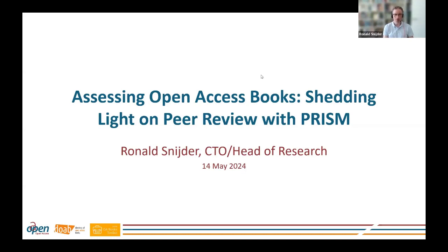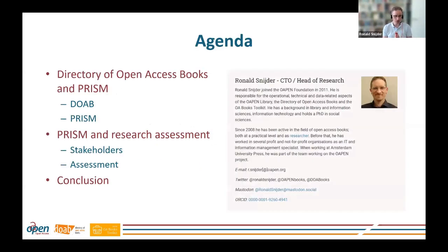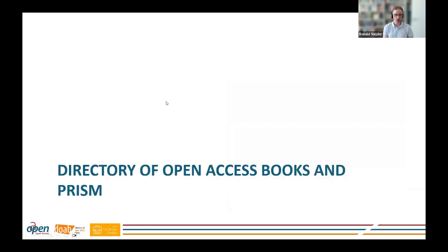I'm going to talk about open access books and peer review, and how we make the peer review process visible on the Directory of Open Access Books. I'm Ronald Snyder from the OAPEN Foundation. The Directory of Open Access Books (DOAB) gives access to peer-reviewed open access books. Books are the preferred publication type in the humanities and social sciences, though about 25% of books listed in DOAB are actually on STEM subjects. DOAB was launched in 2013, and now has over 84,000 titles listed — not hosted on the DOAB platform but linked to books on other platforms such as the Open Library, MUSE, JSTOR, and many publisher platforms. There are over 700 publishers listed, and quite a lot of languages in DOAB — if you look very carefully, you might even find a title in Klingon.